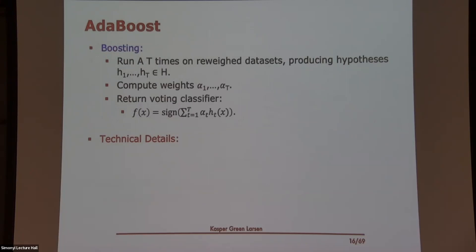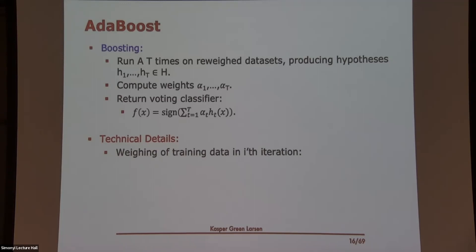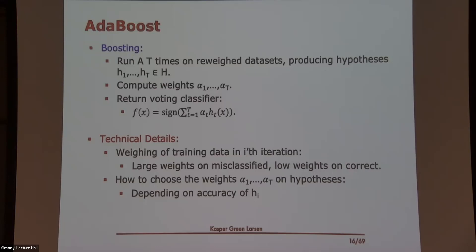The basic idea of AdaBoost is you take this weak learner and run it multiple times. Each time you run it, you put weights on the training data so that some points are more important than others. Each run outputs a hypothesis from H. Then you compute a weight for each hypothesis, and finally combine all these hypotheses into a weighted majority vote — each one has an importance based on these alpha parameters. The key technical detail is how to choose these weights: you put large weights on things you misclassify so far, and small weights on those that are correct, making the weak learner focus on the misclassified points.